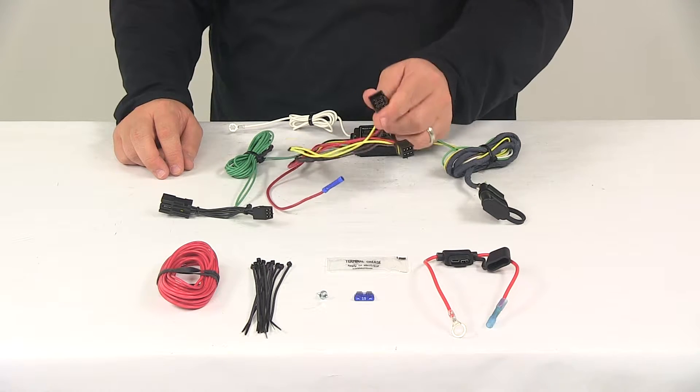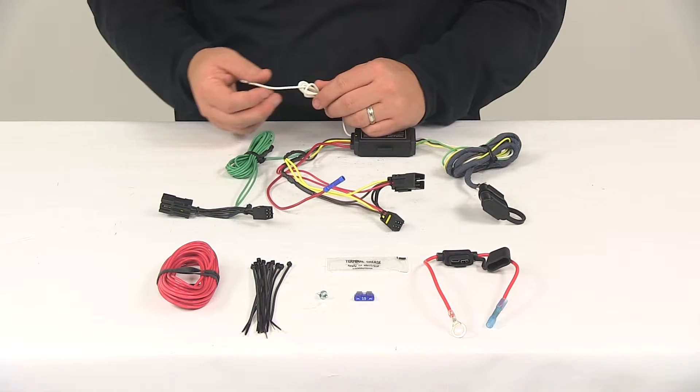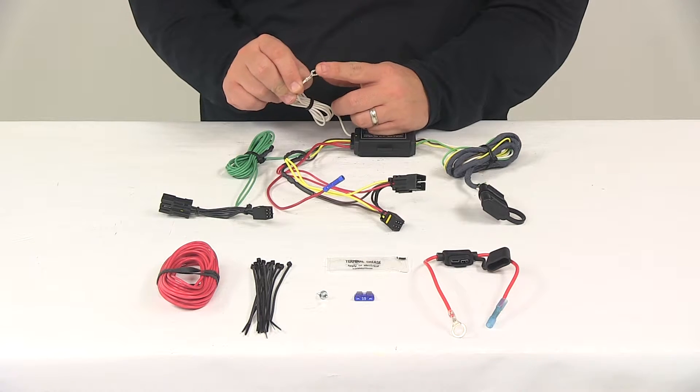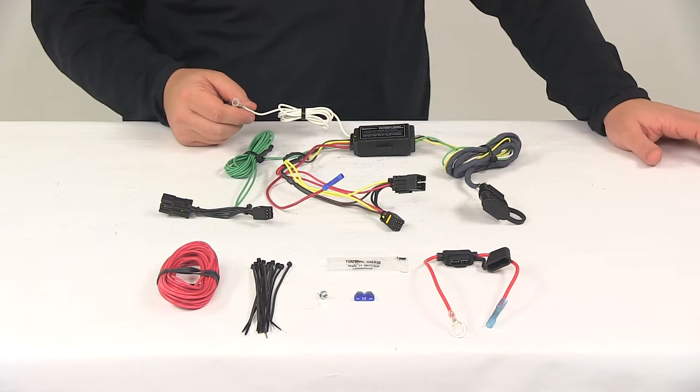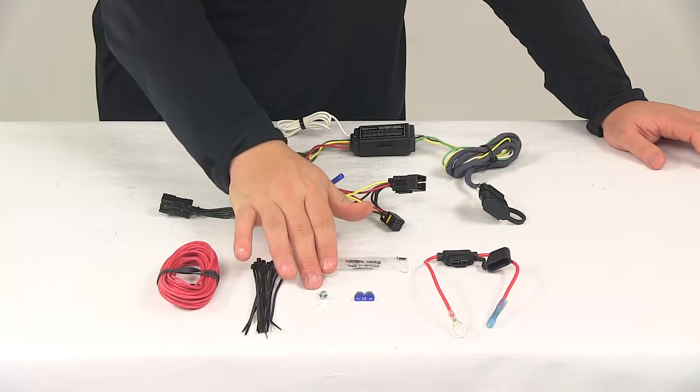So once you get those connected, you can make your ground connection. That's going to be your white wire. It has a ring terminal pre-attached to it. You want to get that grounded to a suitable grounding location with the included grounding screw.